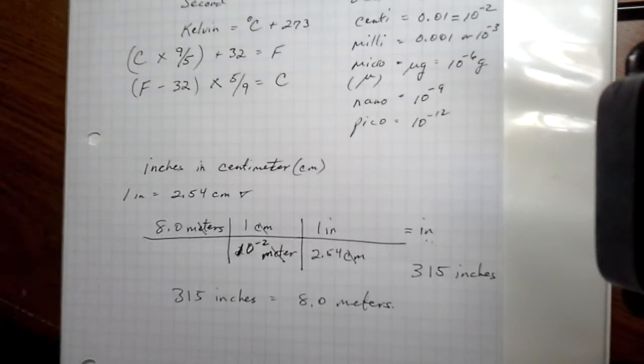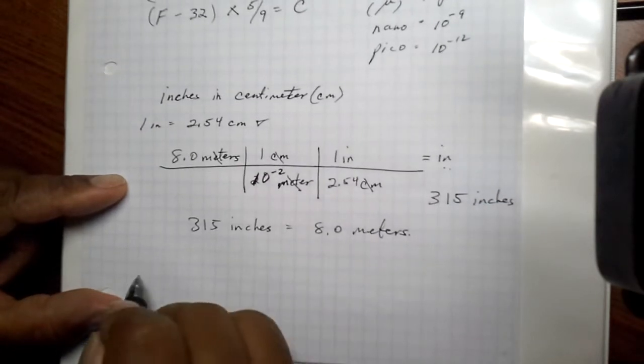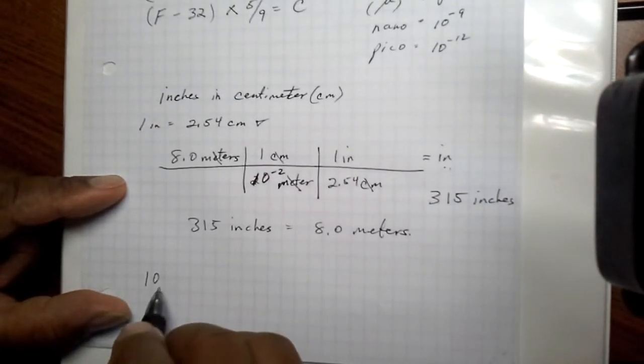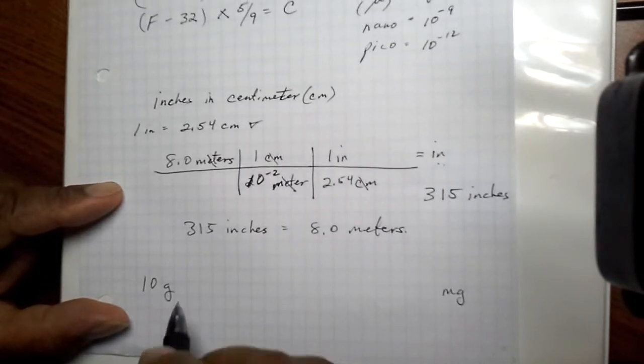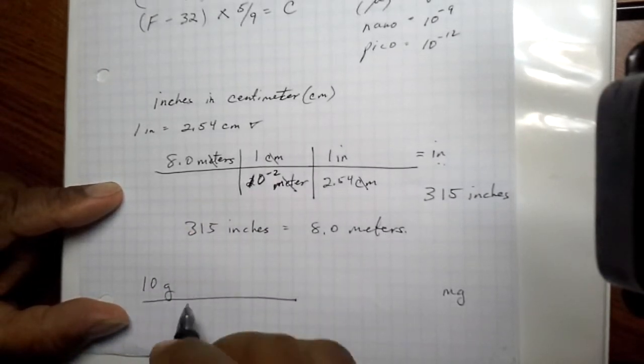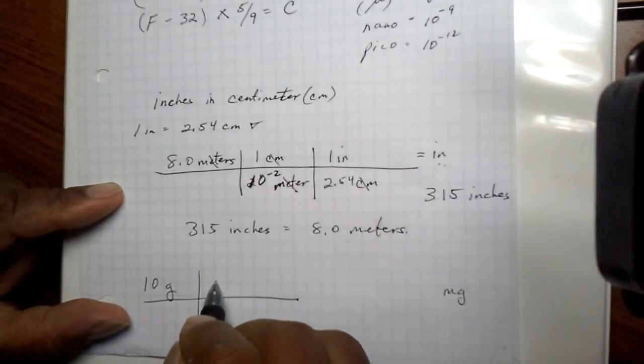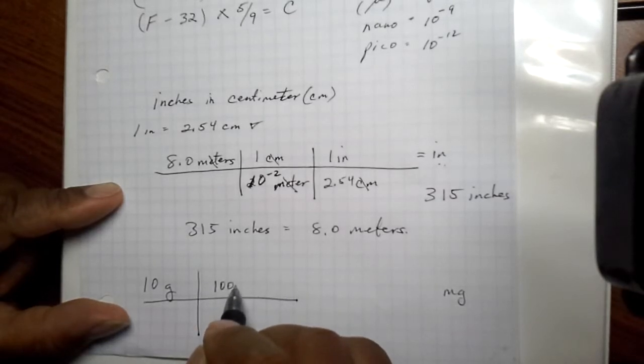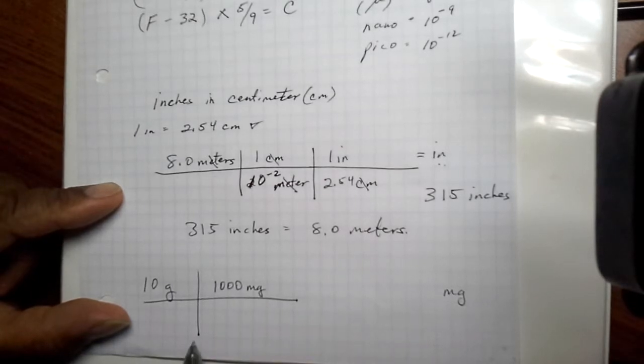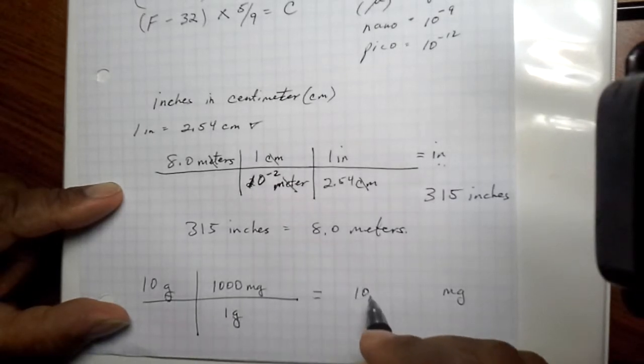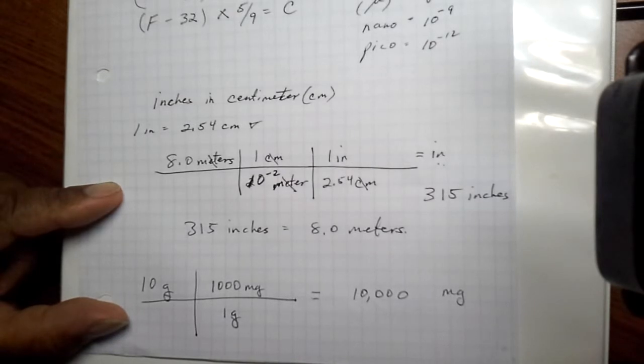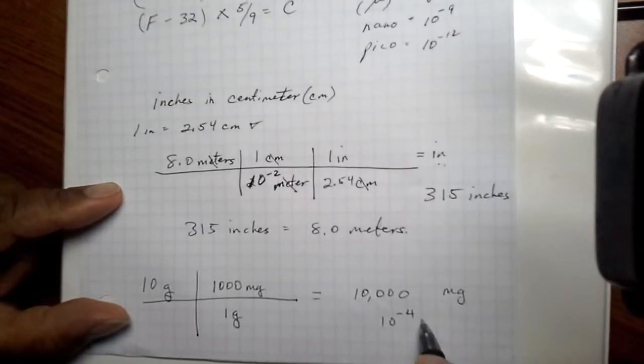So again, something a little more relevant is, for instance, we want to convert, let's say, 10 grams. And we want to know how many milligrams that is. So we set up a similar grid. And we know that there is 1,000 milligrams per gram. My grams cancel out. I equal milligrams. 10 times 1,000 is 10,000 milligrams.